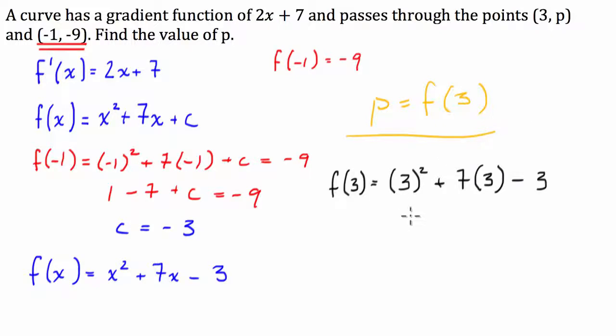Cool. 3 squared is 9 plus 7, 3 is 21 minus 3. So that is going to equal, so p, therefore, p is going to equal 9 plus 21 is 30, minus 3 is 27.